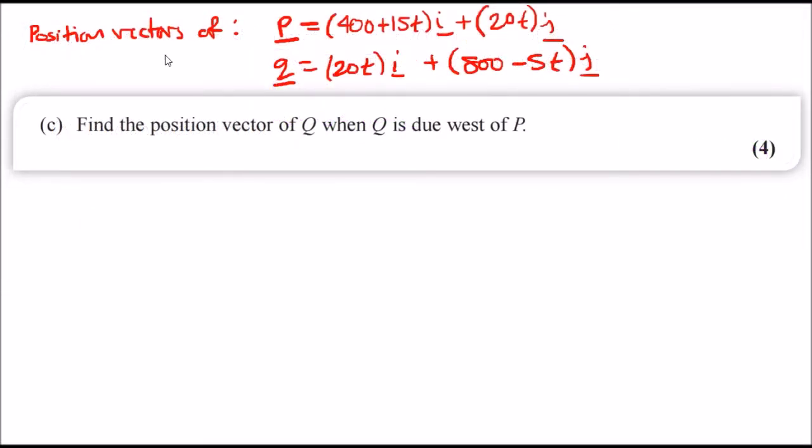I rewrote the position vectors of P and Q respectively in this form because it's useful for part c. The question tells us we need to find the position vector of Q when Q is due west of P. This is a very popular type of question. Let's think about this geographically: if we have P here and it's due west, we've got north here, east here, south and west here.